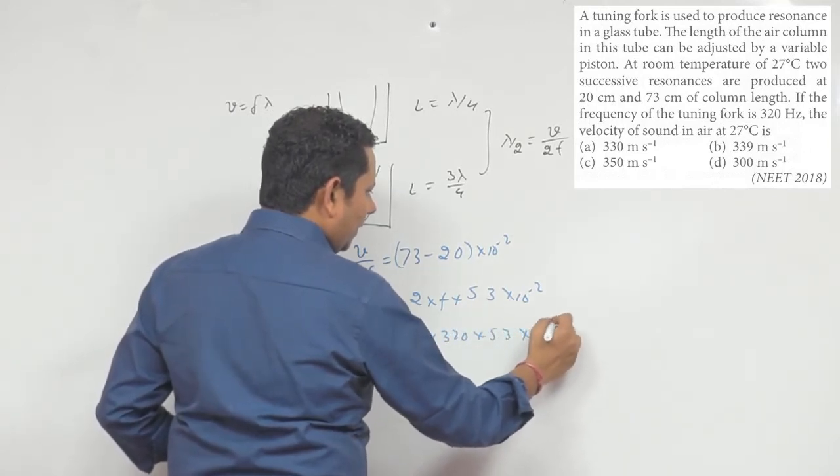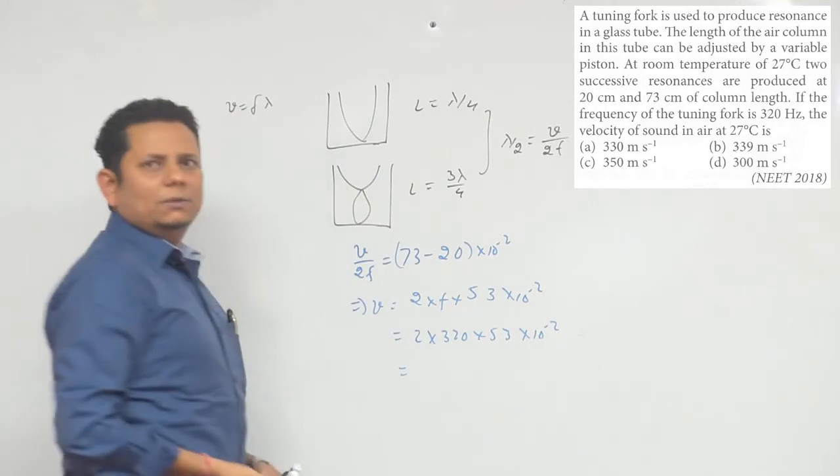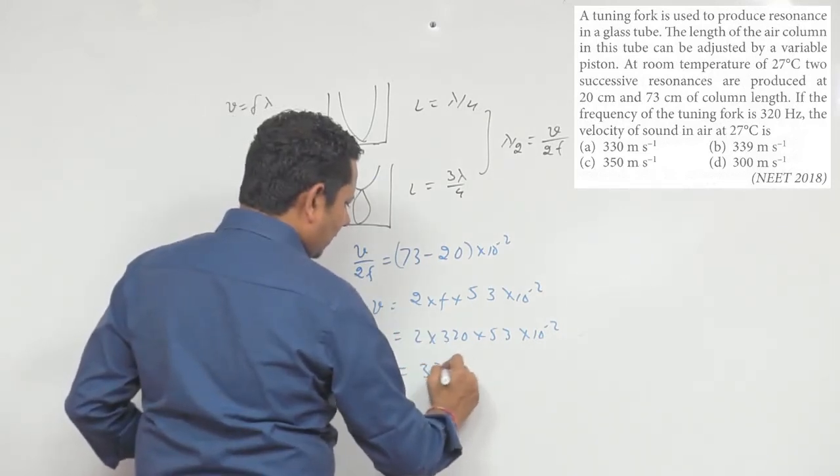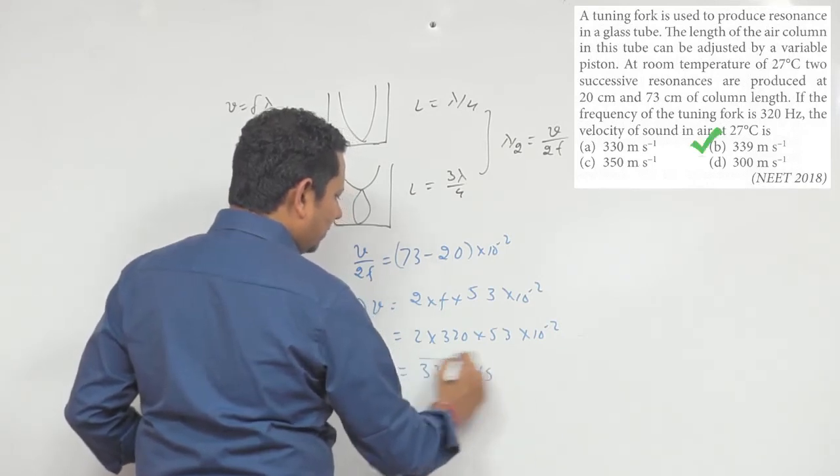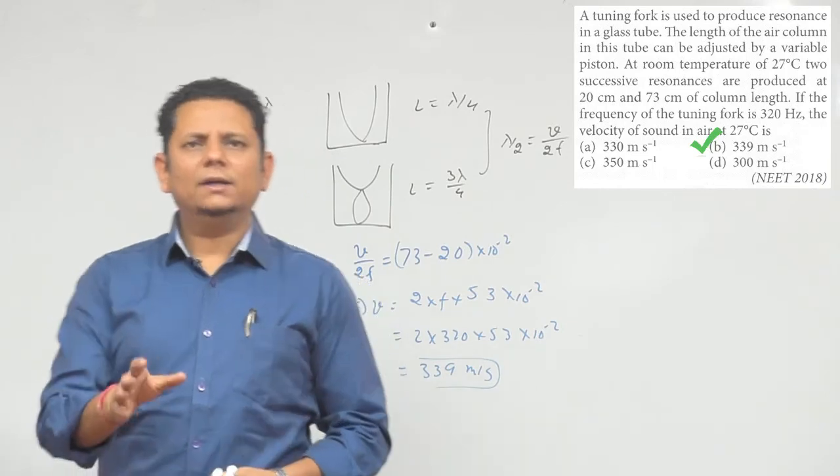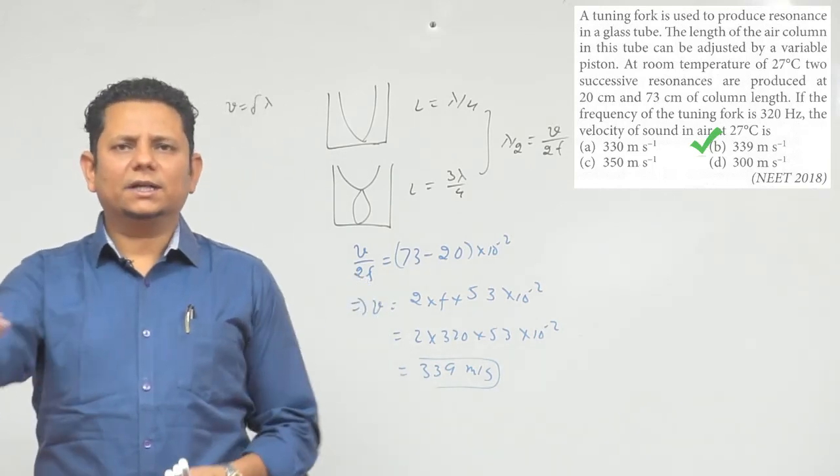So this is equal to approximately 339 meters per second. So based on this, we can say option number B, 339 meters per second, would be the right answer.